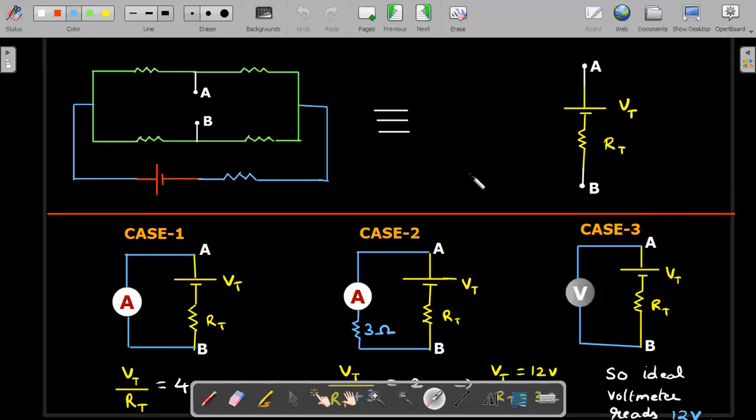So we'll take that into our challenge in this manner. So this is our challenge where he has mentioned points A and B where the connections are being made. Now, according to the theorem, I'll equivalently write it as a sequence of V Thevenin and R Thevenin between points A and B.